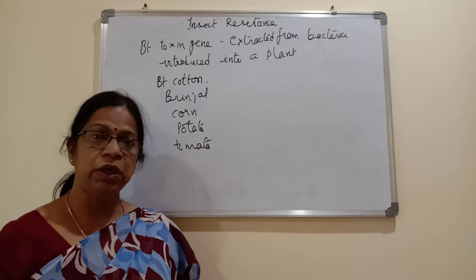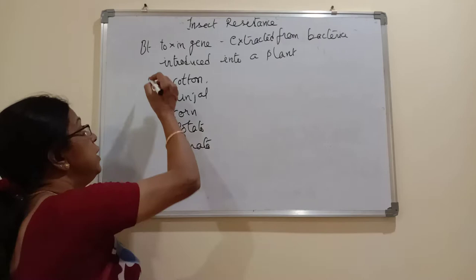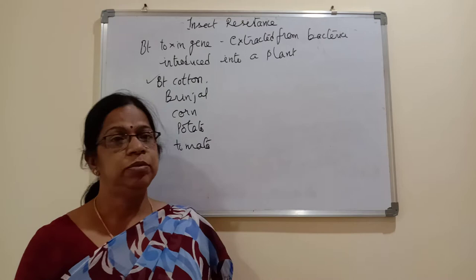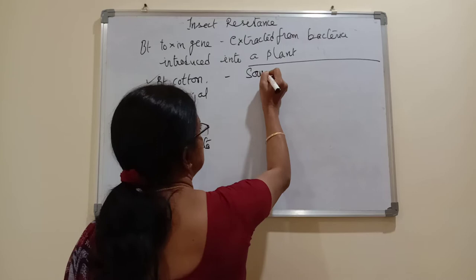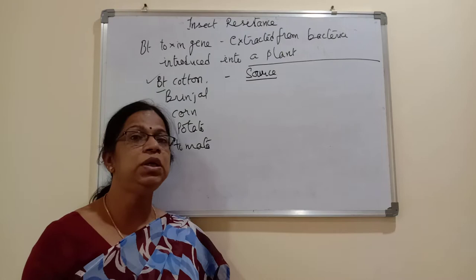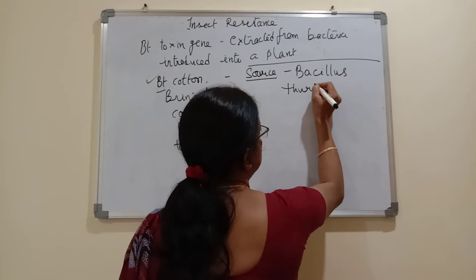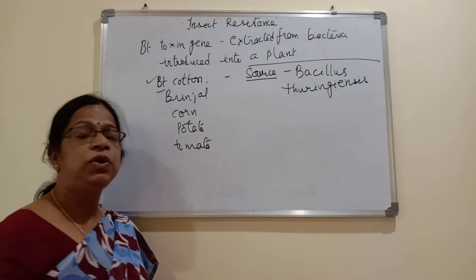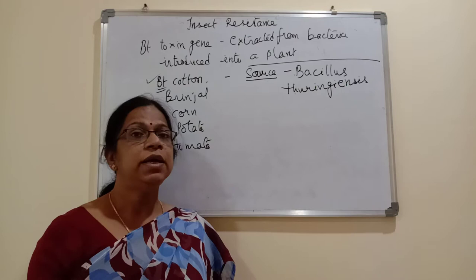Although we get some of these products in the market, they were not widely accepted. The most accepted is Bt cotton. Now, what does 'Bt' stand for? The source of this toxin is the bacterium Bacillus thuringiensis. That is what Bt stands for — the name of this bacterium, Bacillus thuringiensis.